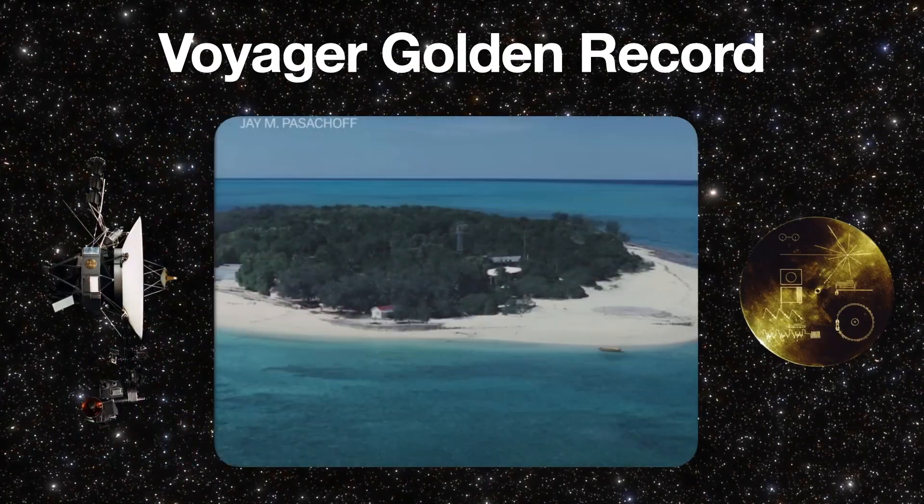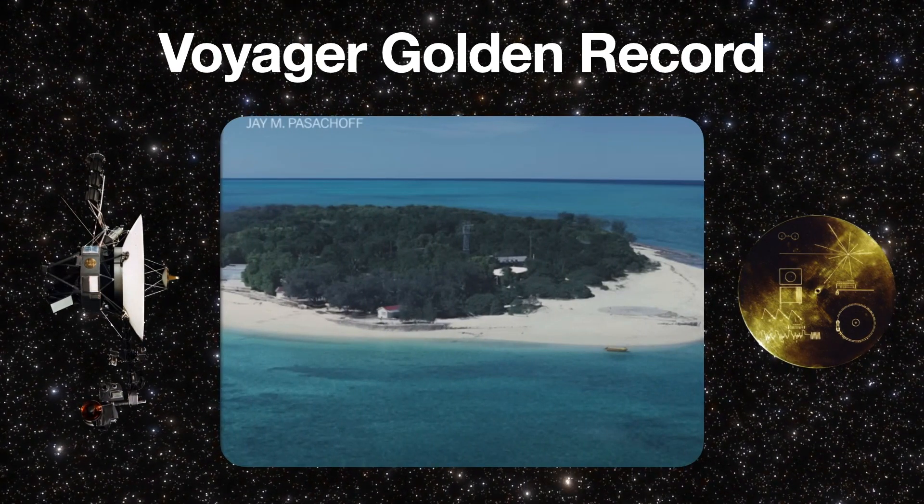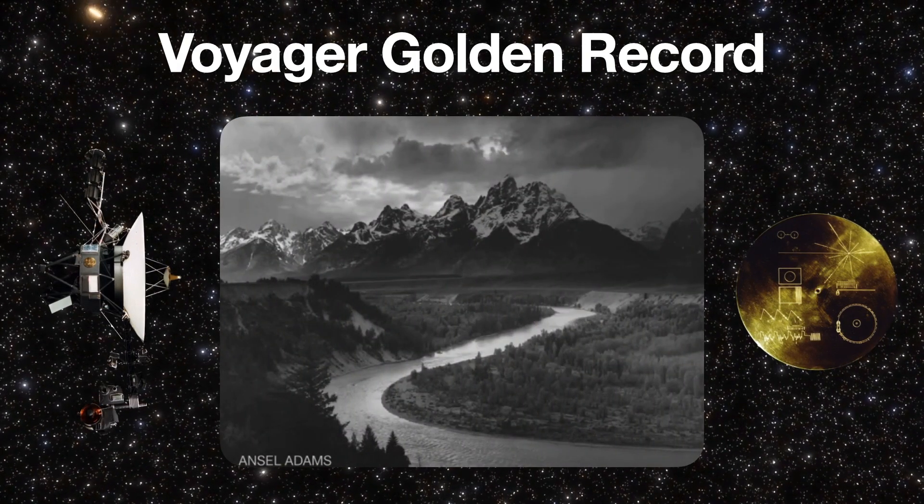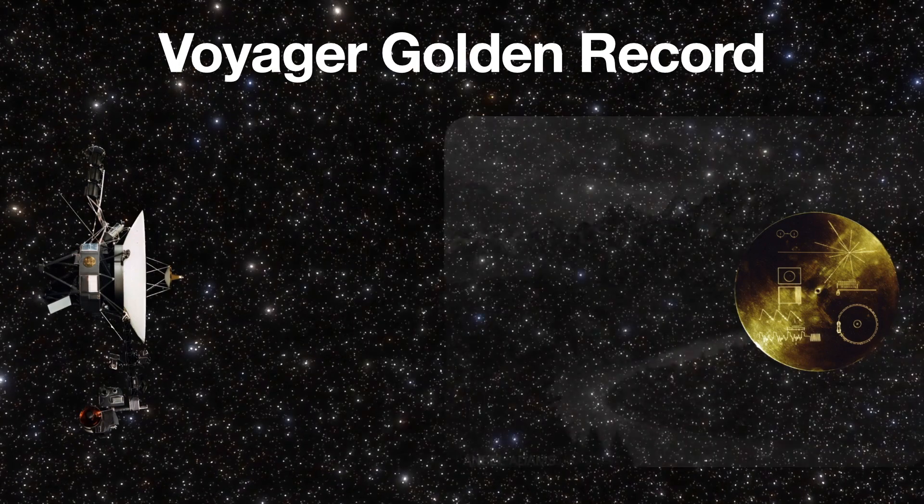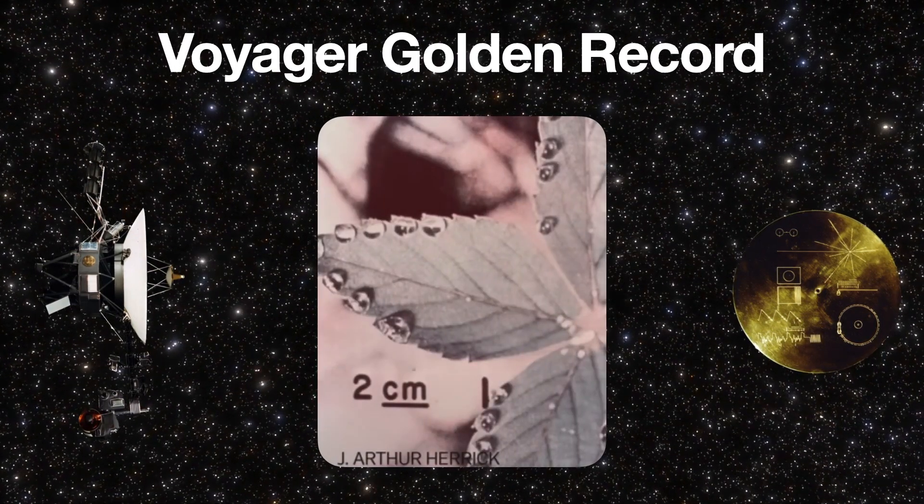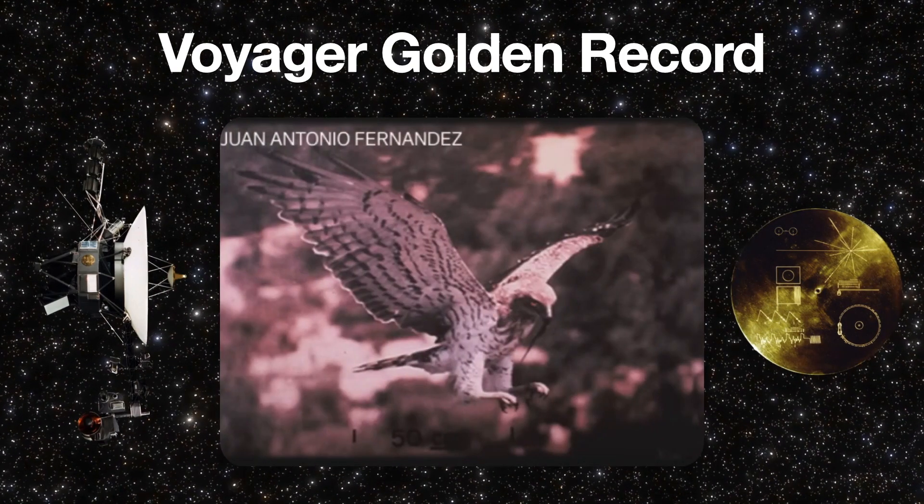The Voyagers each carry a more sophisticated golden record, which in addition to the elements of the Pioneer plaque include images, sounds, and greetings from Earth. There are 116 images, greetings in 55 languages, sounds from things like waves crashing, a train, airplanes, and several animals, and about 90 minutes of music.